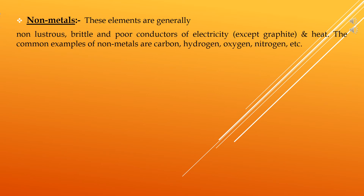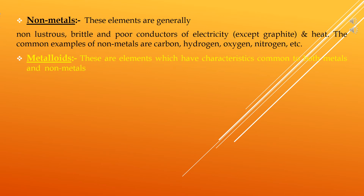The third type of elements are called metalloids. These are elements which have characteristics common to both metals and non-metals. Common examples of metalloids are silicon, arsenic, bismuth, and antimony.